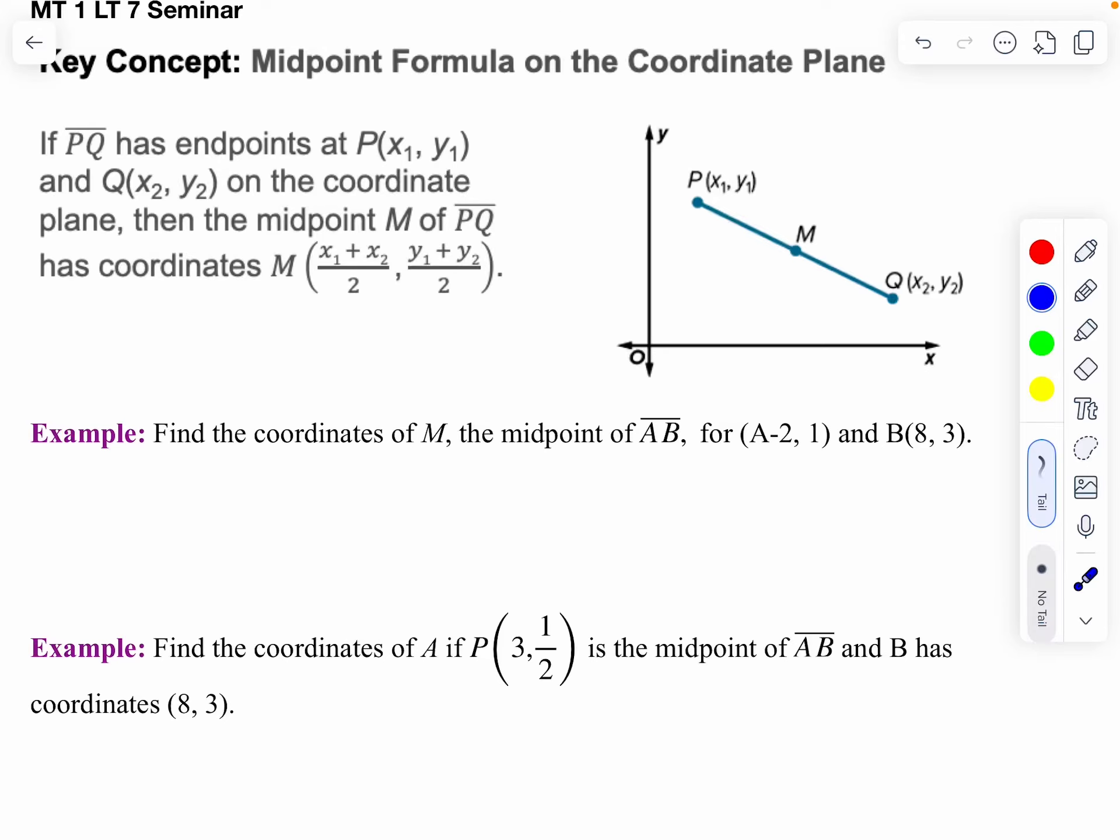Really nothing changes if we shift from a line segment to the coordinate plane. We're still going to find the average of our two endpoints. It's just we have to do it twice. We have to do it once with the x's and once with the y's. We're just going to add them up and divide by two.